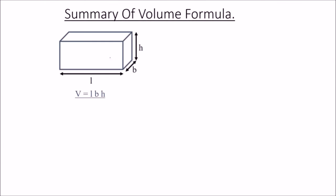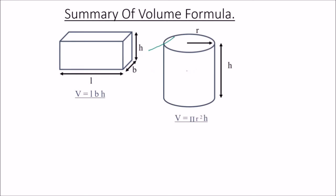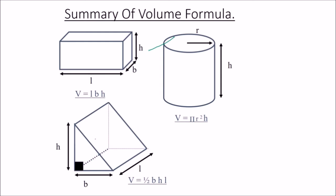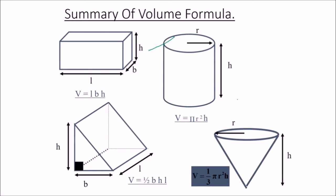Summary of volume formulas: Cuboid = L × B × H; Cylinder = π r² h; Triangular prism = ½ × b × h × l; Cone = (1/3) π r² h; Sphere = (4/3) π r³. All volumes can be understood as cross-sectional area multiplied by height — that is the key concept to understand.